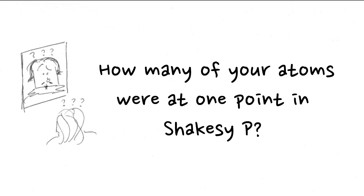Our Earth, being this self-perpetuating ecosystem that it is, has perfected this atomic recycling in such a way that we can be here — we survive, here we are. But what this means is that the atoms in our bodies have also been in the bodies of other people, including William Shakespeare. So the question is: how many of your atoms were at one point in Shakespeare?